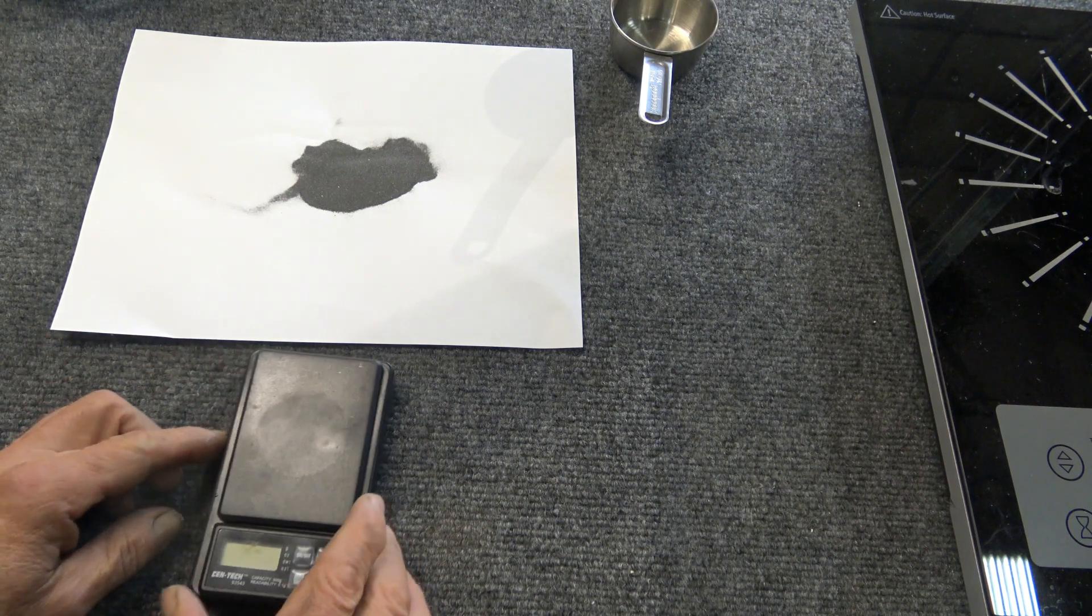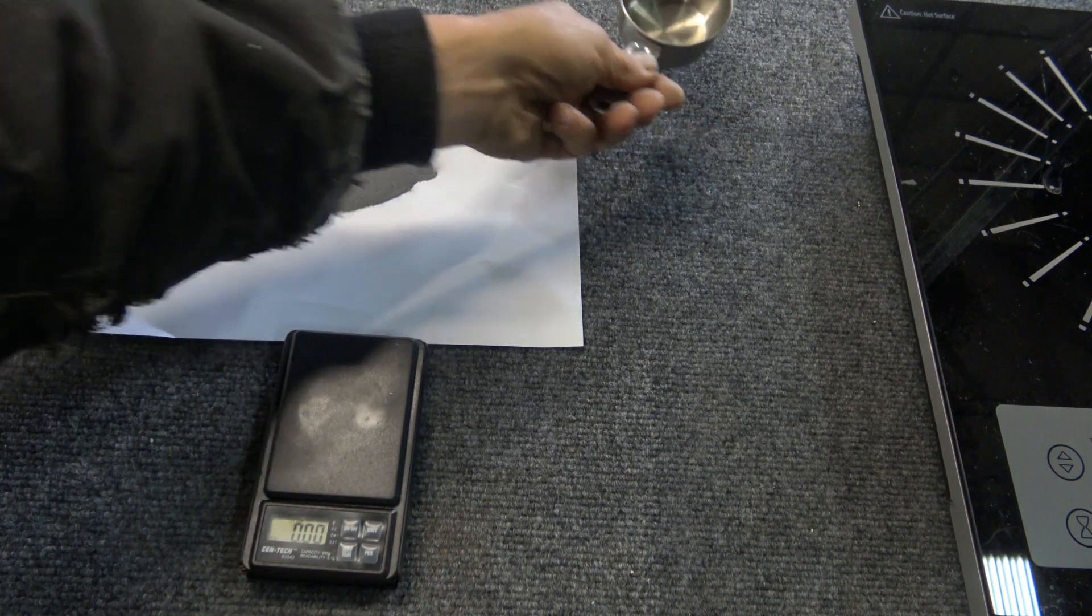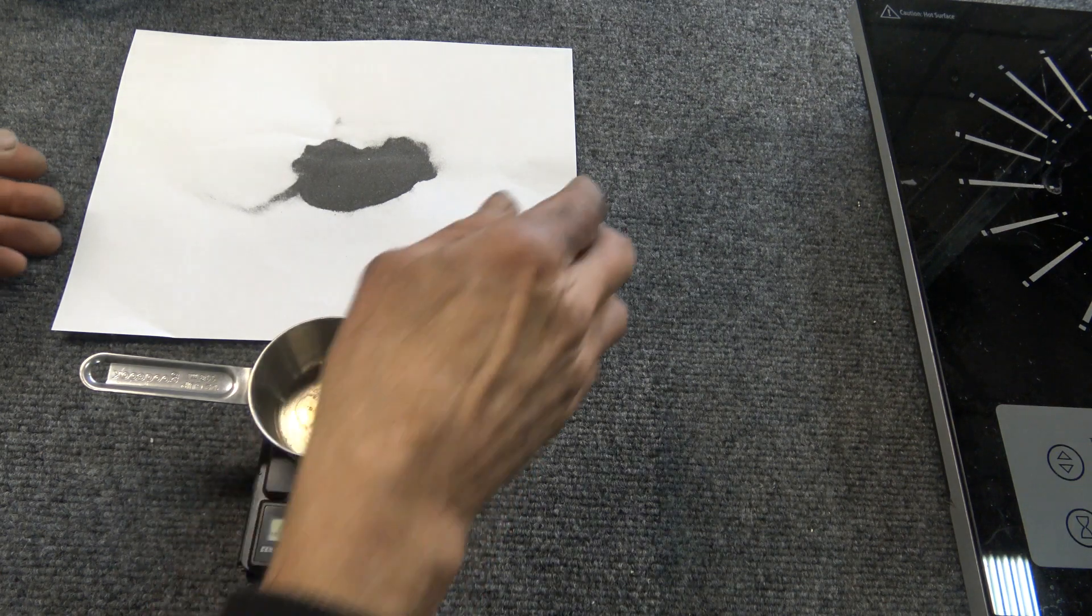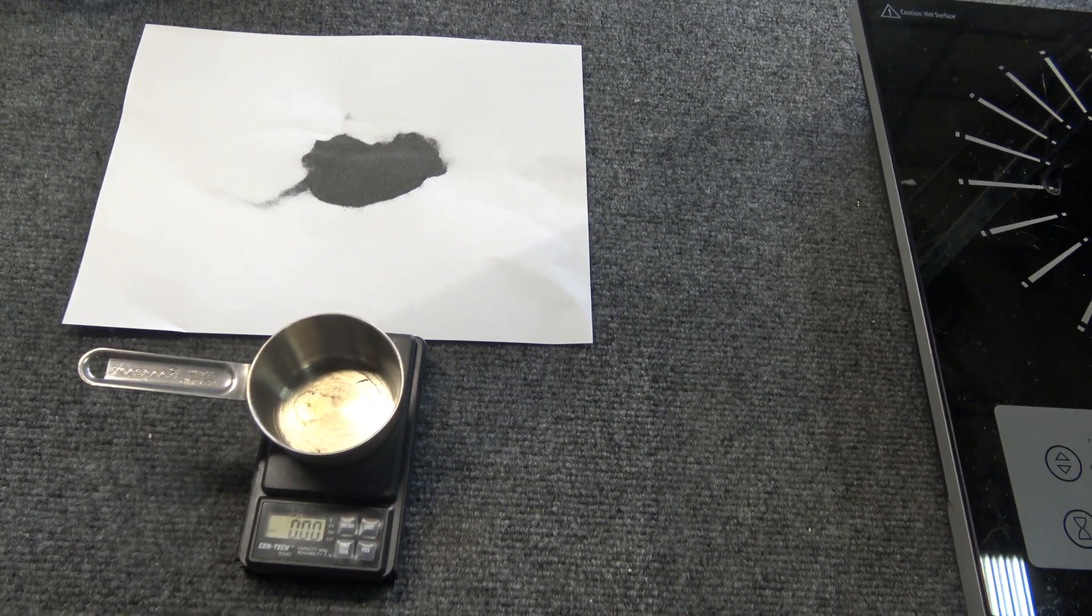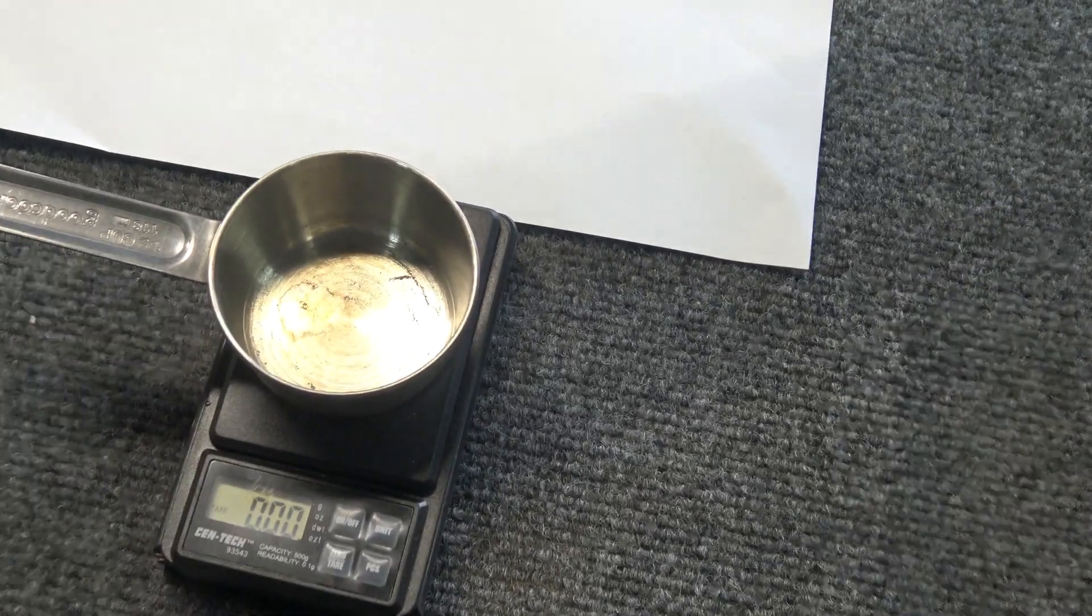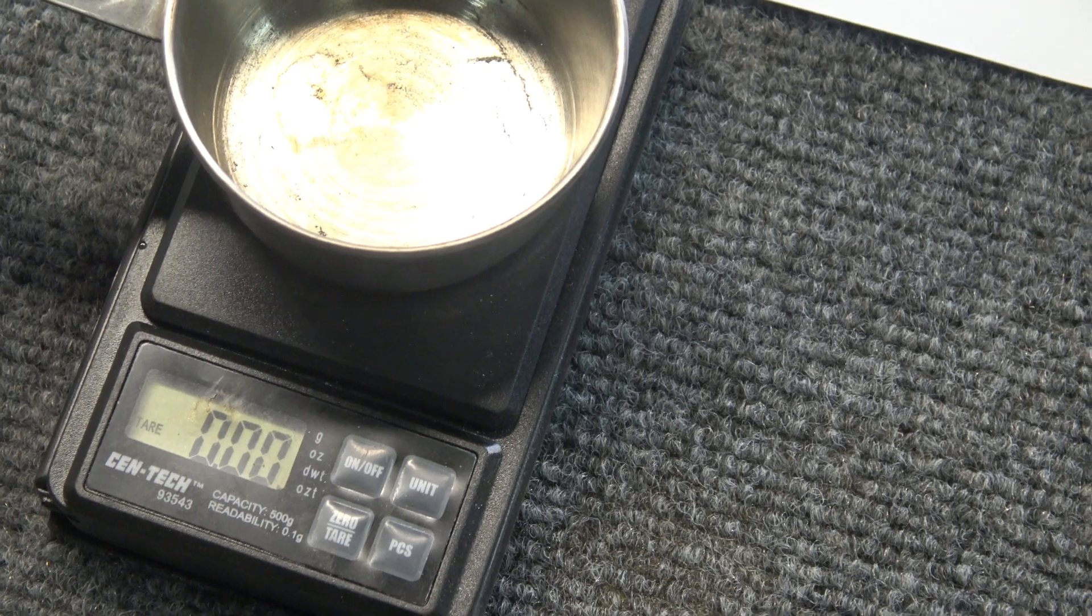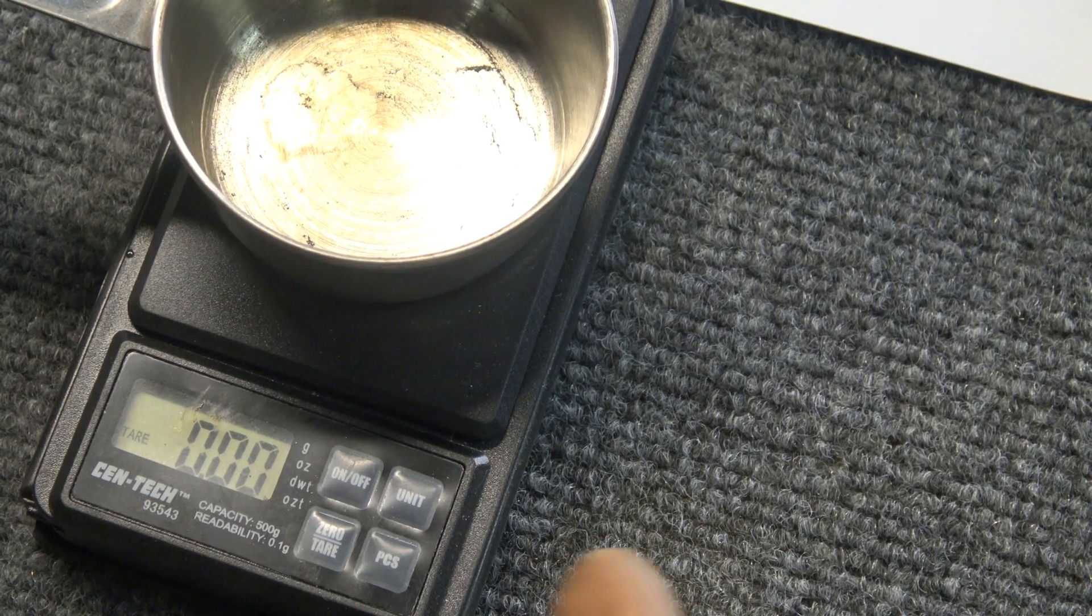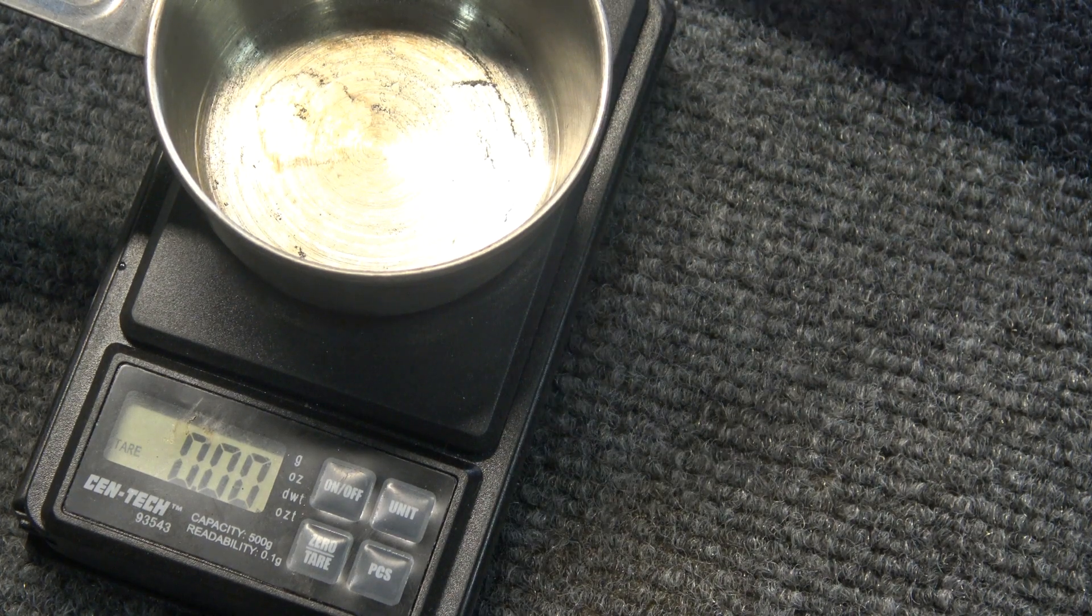Okay, so turn the scale on here, zero it out, put the pan on there, zero that. Okay, let's get a little closer so I can really see what's going on here. Well that will give you a good idea of what's happening. Okay, now let's go ahead and put in the tungsten.